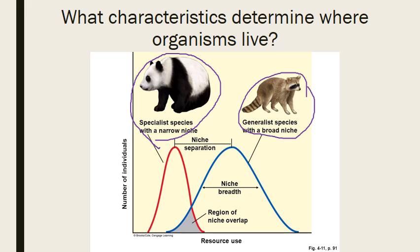Generalist and specialist species are often defined by their niche — the proper pronunciation is 'niche' — which is the role that an organism plays in its ecosystem. Niches can be fundamental, meaning all the roles the organism can play, or realized, which is the actual role the organism plays in its environment. Generalist species have a wider niche breadth, and specialist species tend to have a much narrower one.